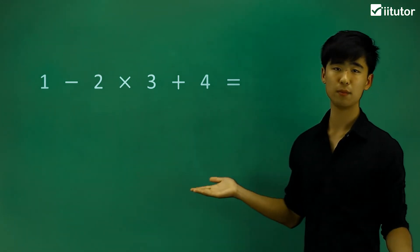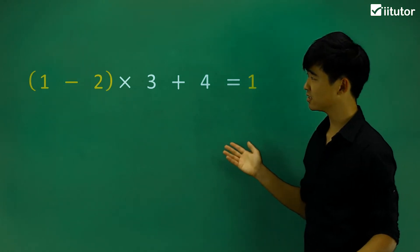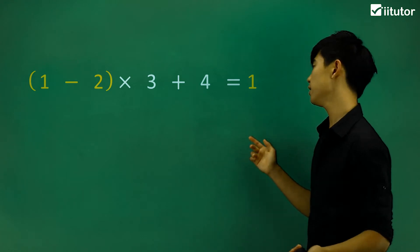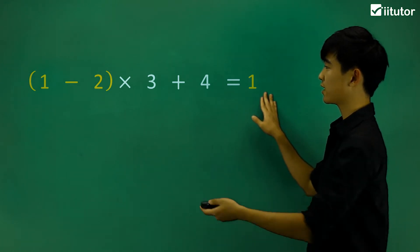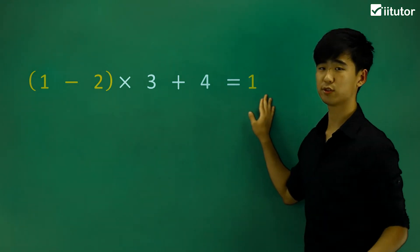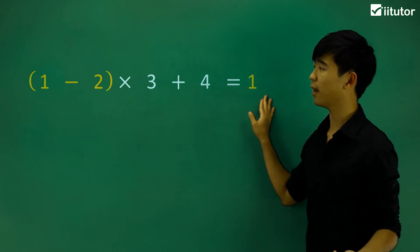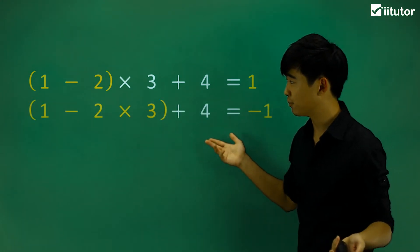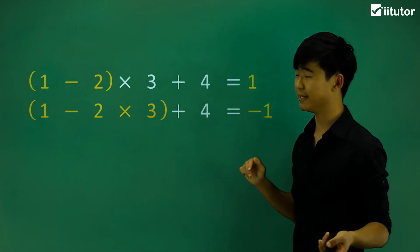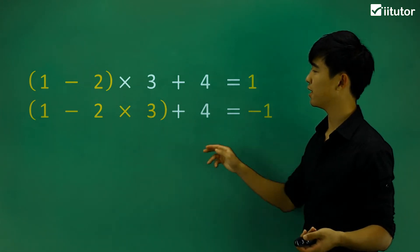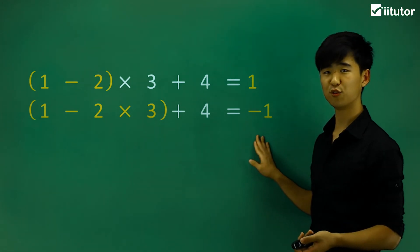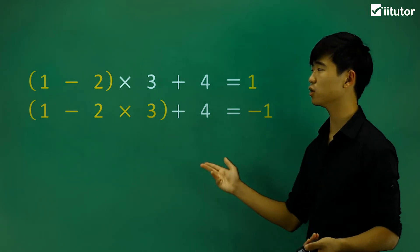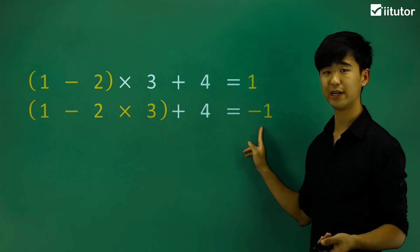So what do I mean by that? Let's say I put my brackets on those two numbers over there, and if I calculate what I have here, it will give me a result of just one. But if I put brackets around these three terms and calculate that, it gives me a negative one. So we can see already that depending on the place of the brackets, my values change.